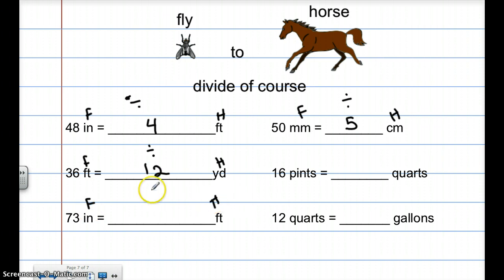I love to put the F and the H so I can remember the rhyme and divide. So how many feet are in a yard? That's 3. So I'm doing 36 divided by 3, which is 12. Then this is fly to horse, divide of course. 73, how many inches are in a foot? That would be 12. I cannot do 73 divided by 12 evenly. It doesn't work. But what I can do is 73 divided by 12 is 6. Because 6 times 12 is 72. So I know that I have 6 with a remainder of 1. But instead of my remainder of 1, that 1 is just 1 inch. So I'm going to go 6 feet, 1 inch. So the remainder of 1 is going to be inches. So whenever you're using it for conversions, you have to put inches.